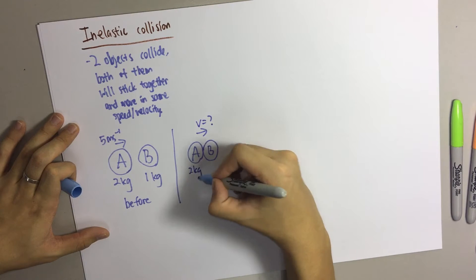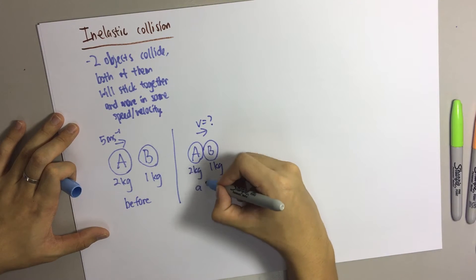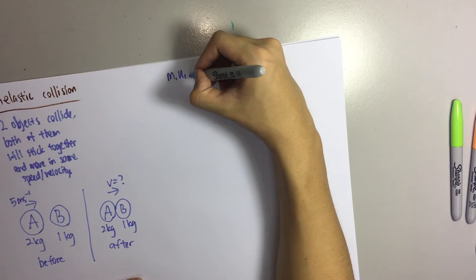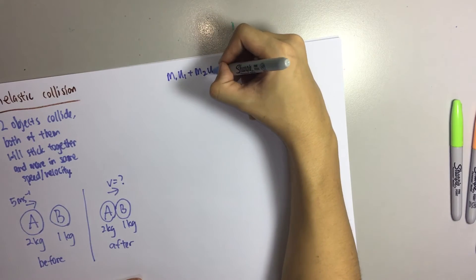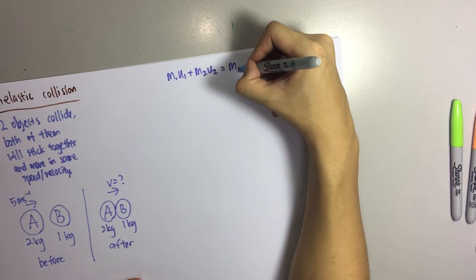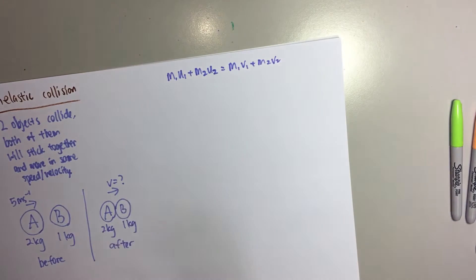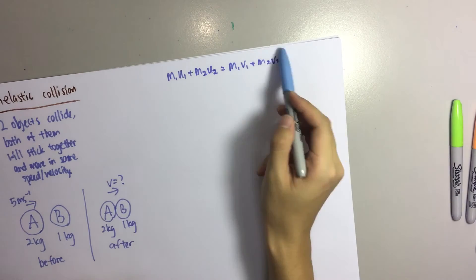So the mass will stay constant. In this question, how do you do? We are using the same formula, but there's some changes we can make here.